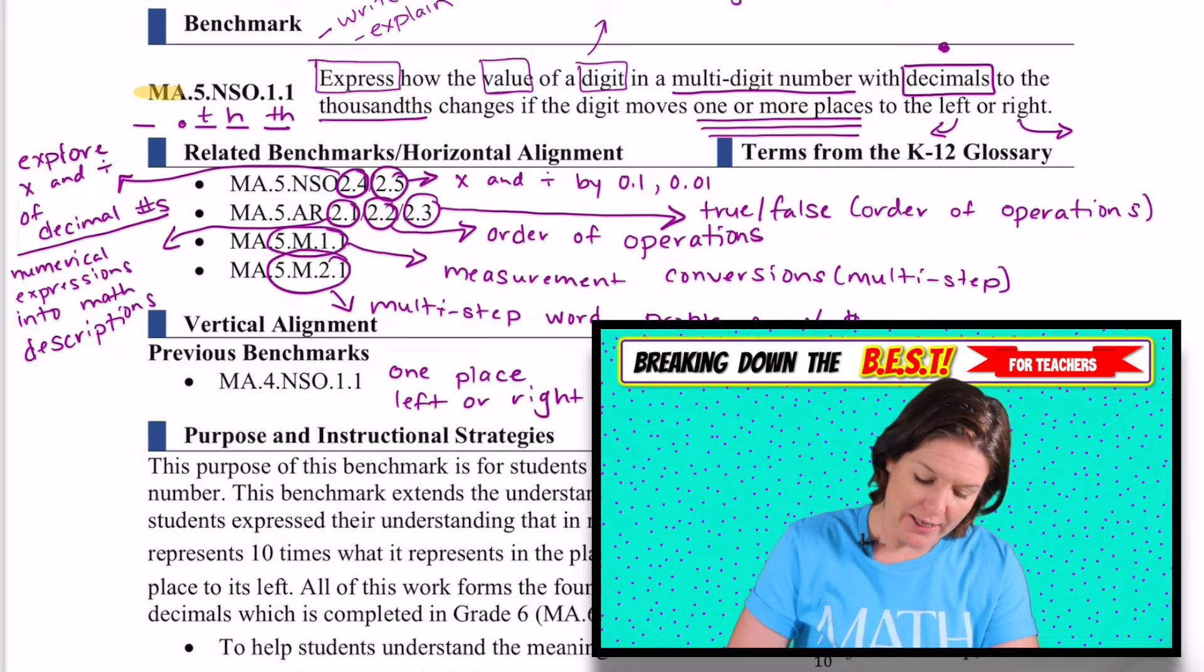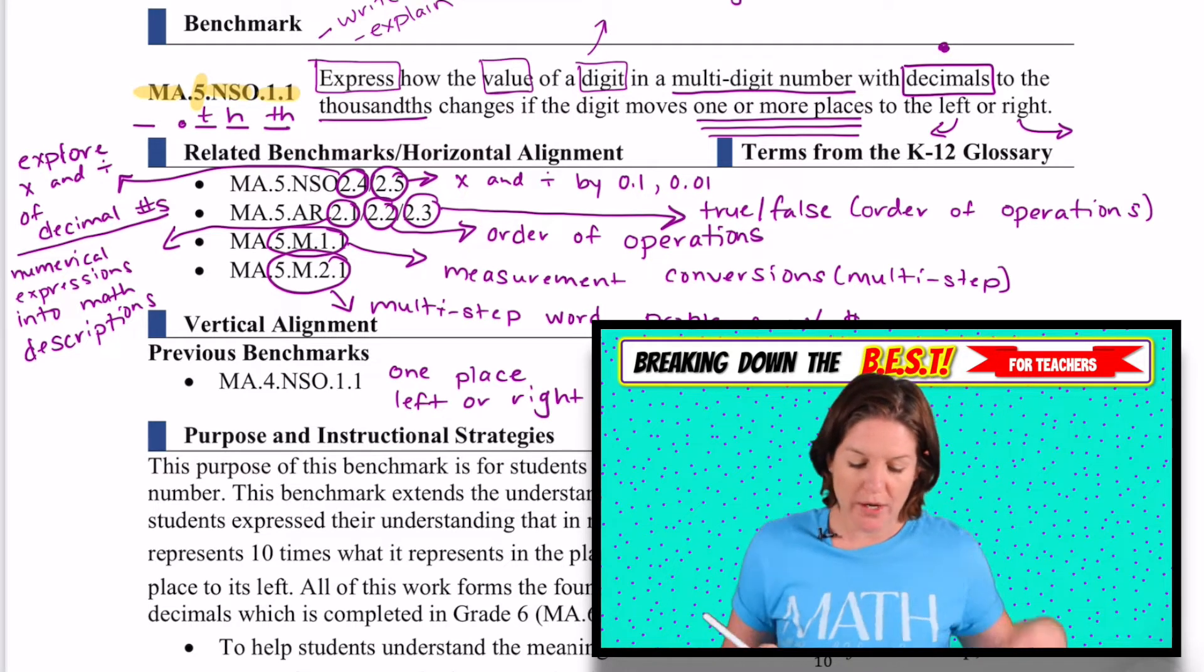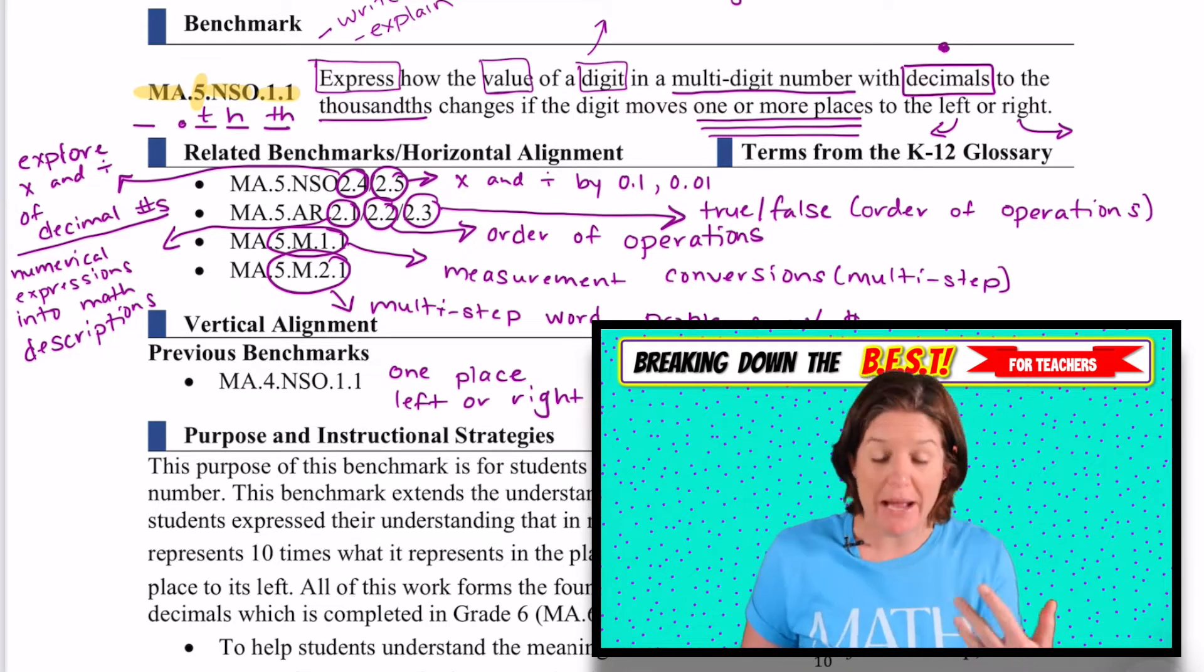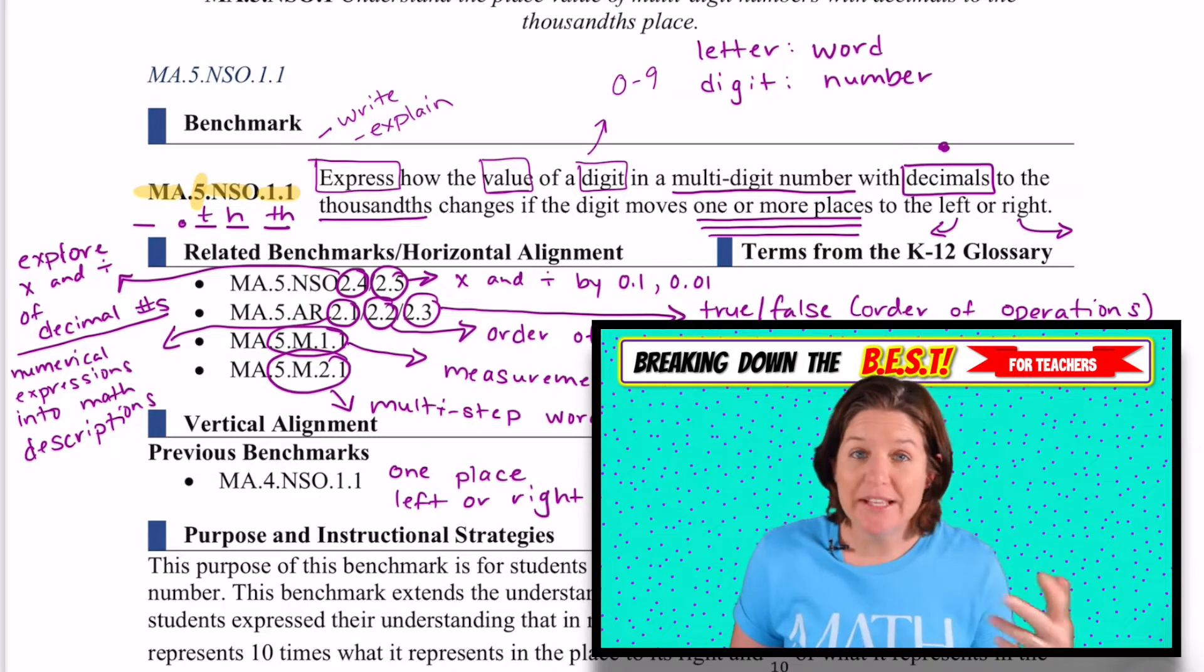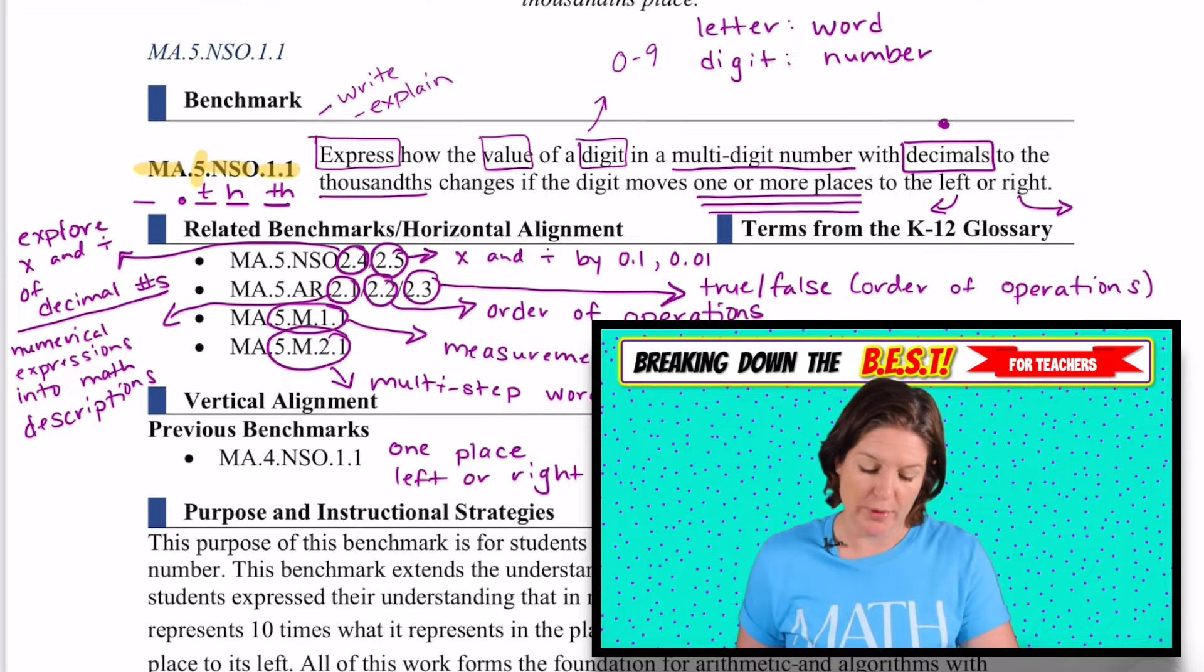We are working on MA.5.NSO.1.1. MA stands for math, 5 stands for fifth grade, NSO stands for number sense and operations. The one means that we're working on place value, and then the second one means it's the first standard in place value.